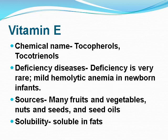Vitamin E: its chemical name is tocopherols or tocotrienols. Deficiency is very rare; it may cause mild hemolytic anemia in newborn infants. Sources include many fruits and vegetables, nuts, seeds, and seed oils. Solubility: it is soluble in fats.